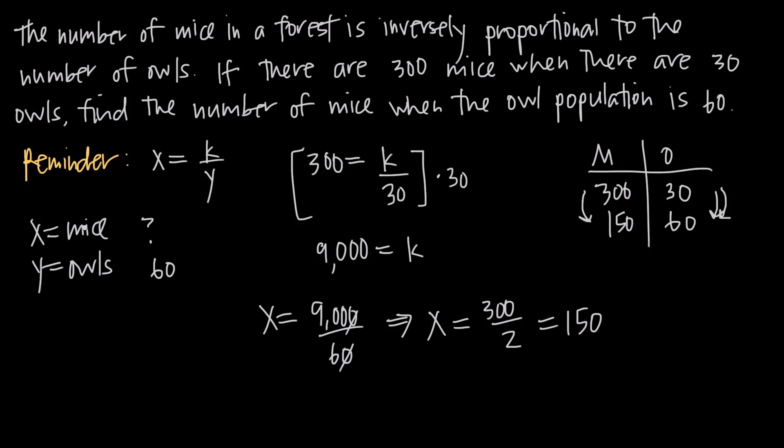If you want to go ahead and choose owls to be x and mice to be y, do the problem over again. You'll get a different value for k, but when you go ahead and plug back in for k and plug back in for owls as x instead this time, you'll just solve for y and you should still get the same answer. So that's always a way to double check yourself if you want to. Just change the assignment of the variables to see if you end up with the same answer.